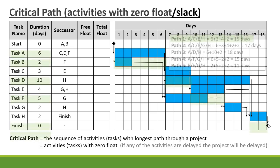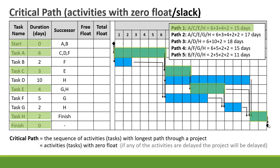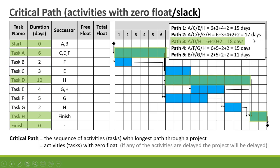Let's calculate the duration of each path on the Gantt chart. Path 1 is A→C→E→H: 6 plus 3 plus 4 plus 2 equals 15 days. Path 2 is A→C→E→G→H: 6 plus 3 plus 4 plus 2 plus 2 equals 17 days. Path 3 is A→D→H: 6 plus 10 plus 2 equals 18 days.